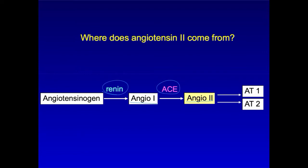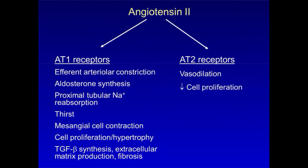A2 is a multifaceted hormone that acts on two types of receptors. It serves several functions in maintaining volume and osmolar homeostasis. One way to make sense of its seemingly unrelated actions is to think about them in the context of the body's response to volume depletion. Here are five ways that A2 can help you out when you're volume depleted.